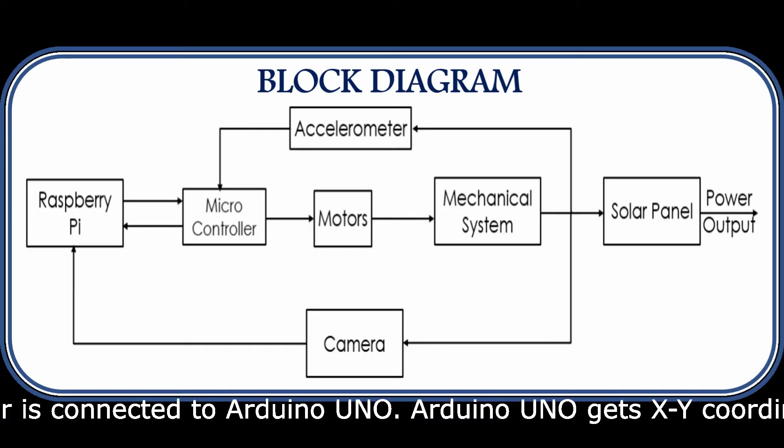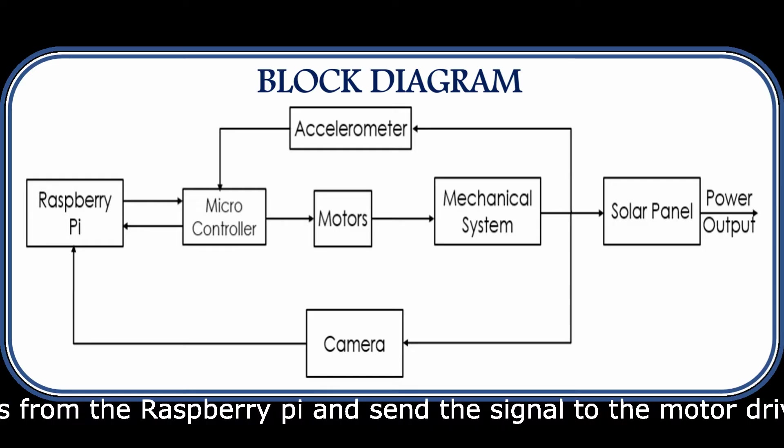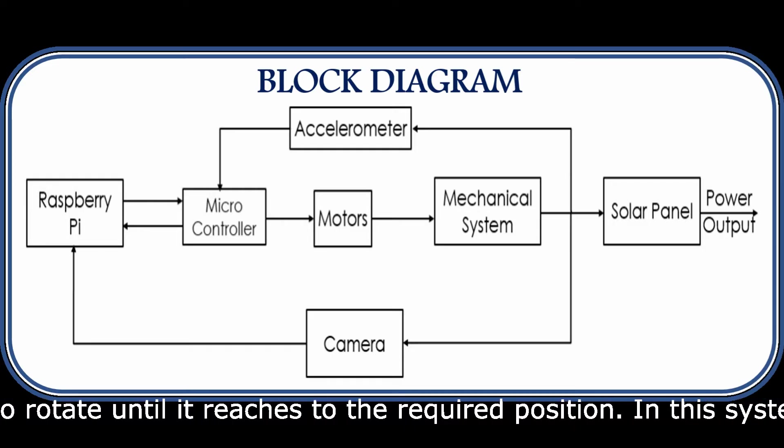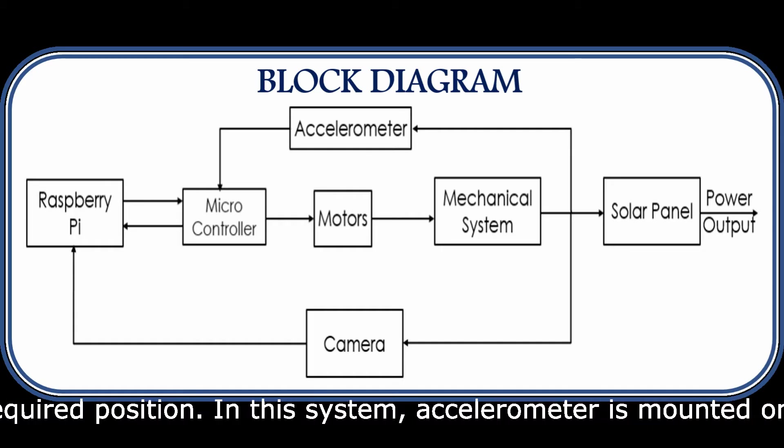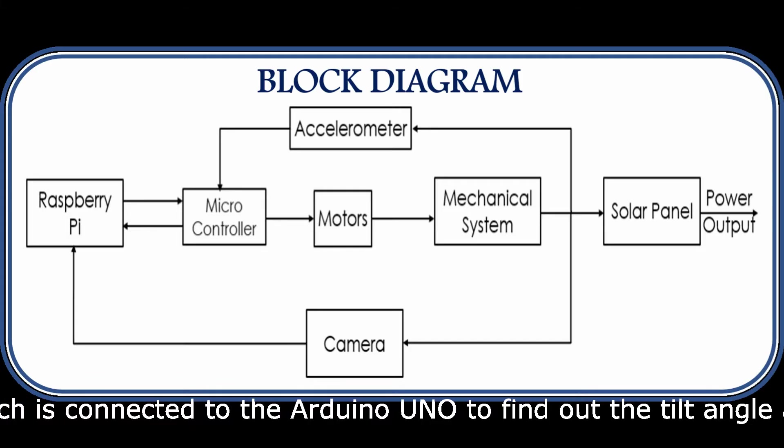Two, active system. In this system tracking is done based on sensors or combination of both sensors and time slash date. This method is used mostly due to its high tracking system.